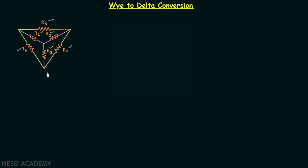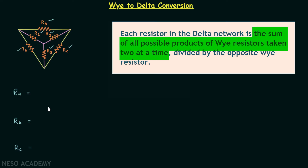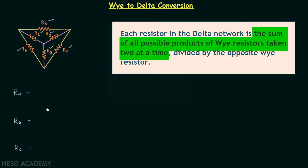All three resistors of the delta network — ra, rb, and rc — are equal to the sum of all possible products of Y resistors taken two at a time, divided by the opposite resistor. So let us understand what we mean by the sum of all possible products of Y resistors taken two at a time. When you look at the Y network, you will find we have three resistors: r1, r2, and r3. Now we want all possible products of these Y resistors taking two at a time.